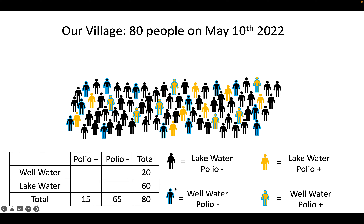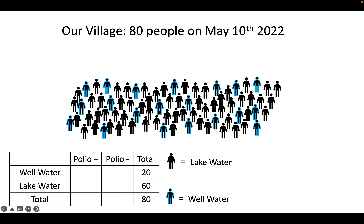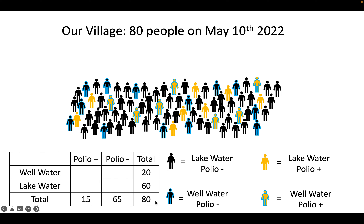As soon as you see yellow there is a polio-positive case, and as soon as you see a blue outline there is a well-water-exposed individual. So that's how we build from the visual to the table. This lets us figure out whether those who are exposed to well water might be more or less likely to get polio.